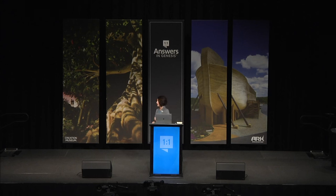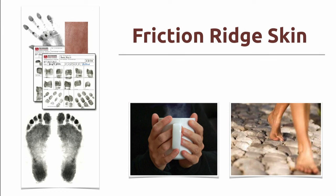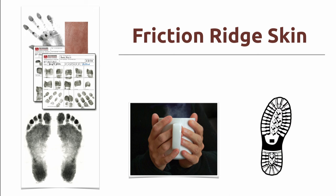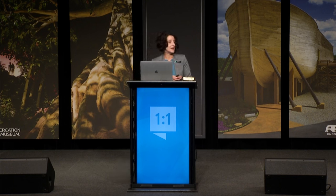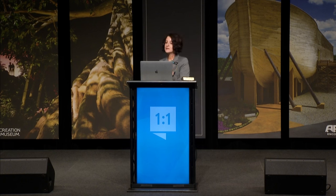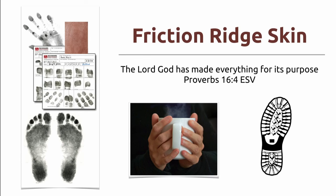Friction ridge skin has a very unique purpose — it allows you to hold things without dropping them, giving you almost a sandpaper, non-slip surface. You're also able to walk without slipping because it's on the bottom of your feet. If you look at the bottom of your shoes, you'll see ridges there for traction. Do you think sneaker manufacturers came up with that idea first? No — our intelligent creator God came up with that design first on the soles of our feet. The Bible tells us in Proverbs 16:4, 'The Lord God has made everything for its purpose,' and your friction skin serves that purpose — it gives you a non-slip surface.